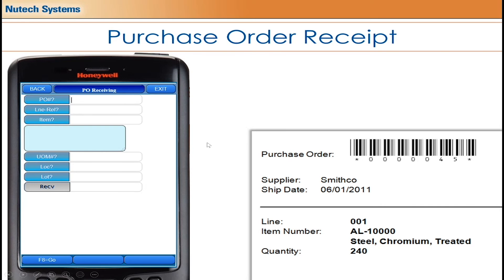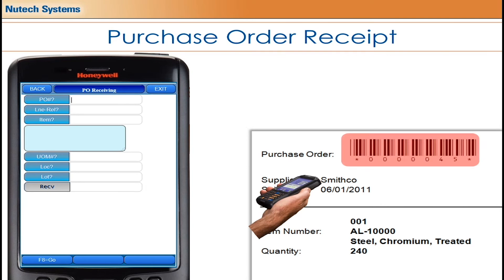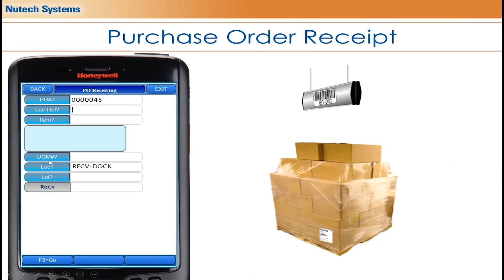First, we're going to scan the purchase order of the item. As you can see, the location auto-defaulted to the receiving dock. We did that on purpose in this example to show it's an option with the flexibility of the software. If there's only one receiving dock and you'll always receive items at that one specific location, there's no need for the user to click or scan every time, so we've auto-defaulted it to limit any potential confusion.